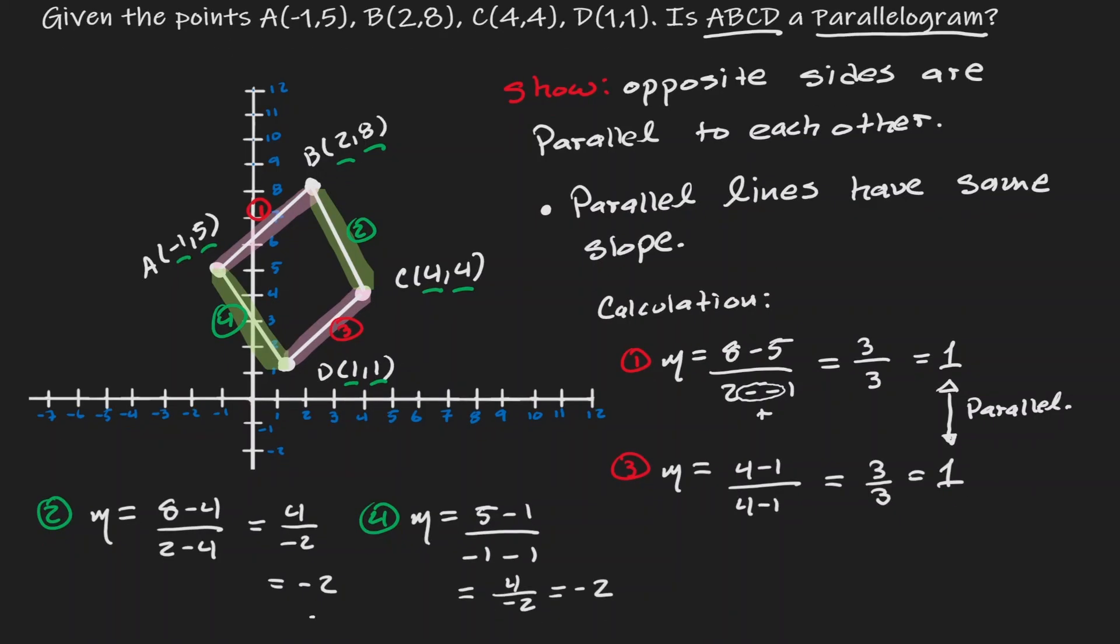Now notice that line two has the same slope as line four. Therefore, they are parallel.